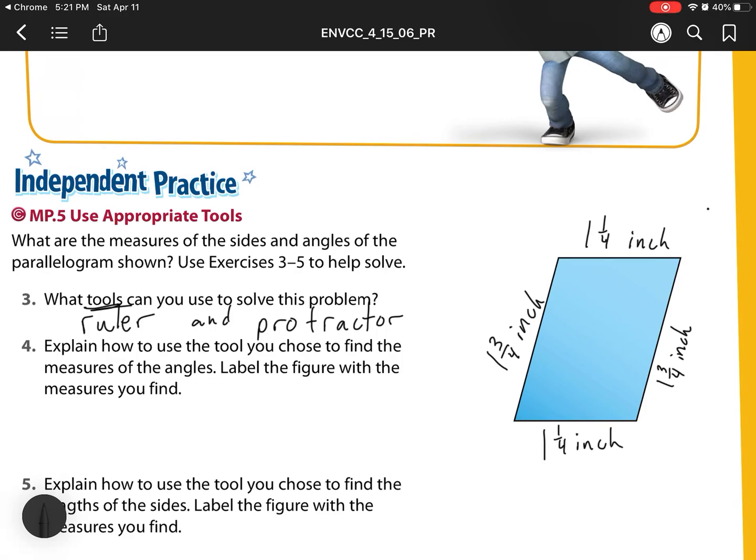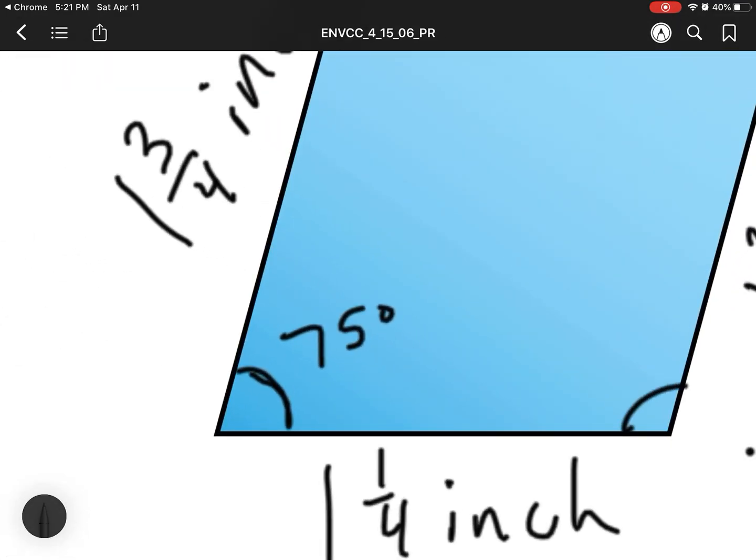Now, using that protractor, we're going to measure this angle, and we will get 75 degrees. Using the protractor to measure this angle, we'll figure out that's 105 degrees.